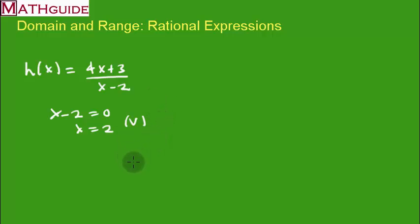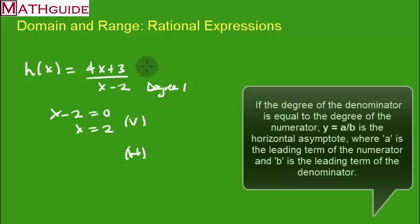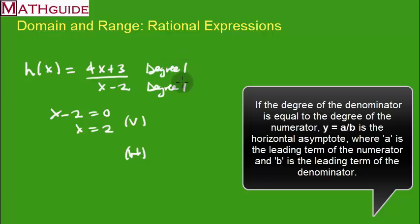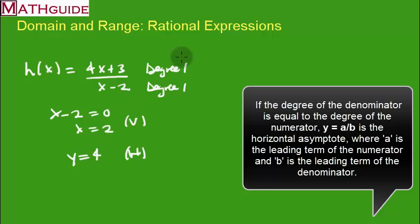To find the horizontal asymptote, we compare degrees. The denominator has degree 1 and the numerator also has degree 1 — they're equal. When the degrees are equal, you take the leading coefficients and divide them: 4 divided by 1 gives 4. So the horizontal asymptote is y equals 4.